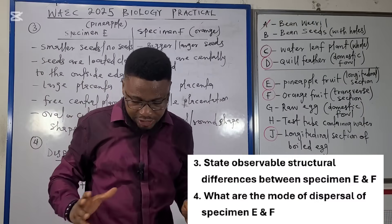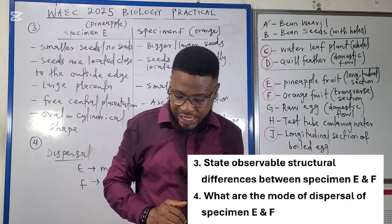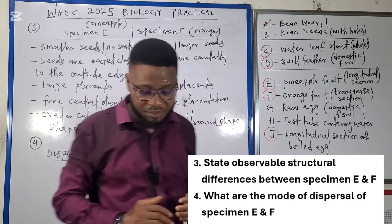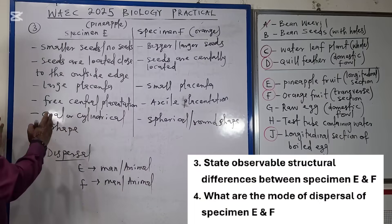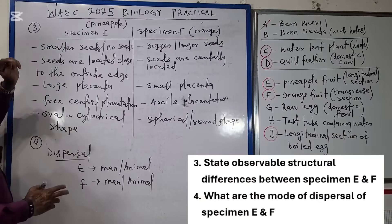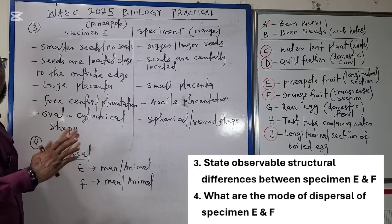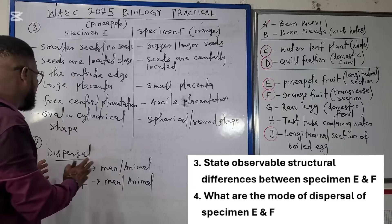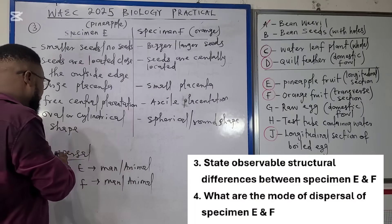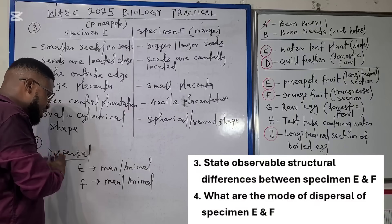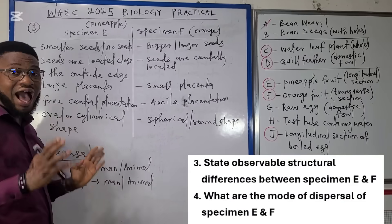Moving on to question four: what is the mode of dispersal of specimen E and F? The mode of dispersal is animals — or you may say man or animal — that disperse specimen E and F.